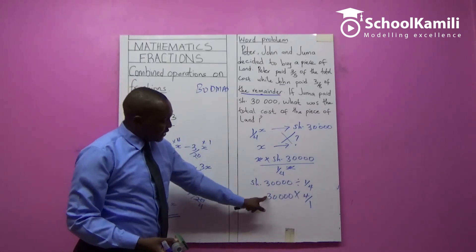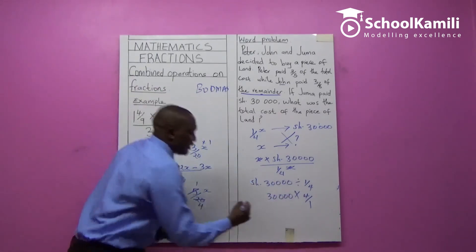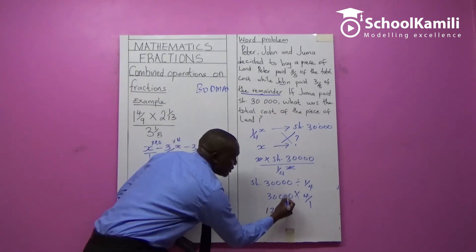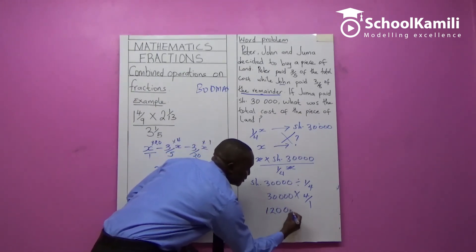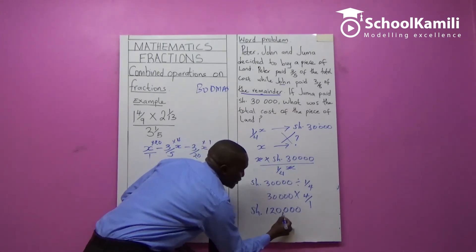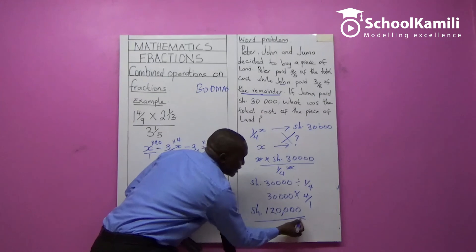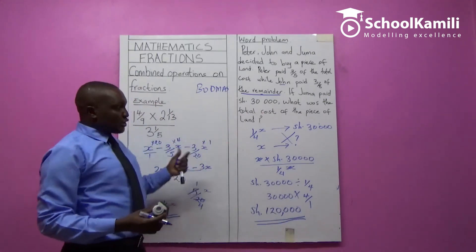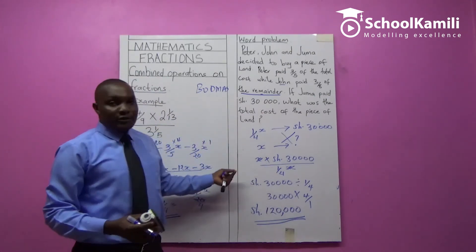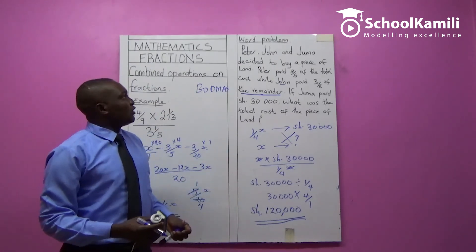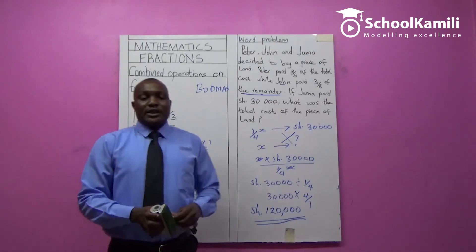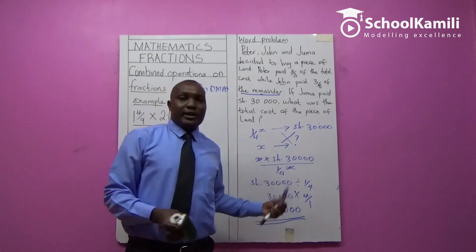The easiest way to multiply: 3 × 4 = 12, then count the zeros — that gives 120,000 shillings. That was the total cost of the piece of land. That's how you can solve word problems. Do more exercises and you'll be able to get the concept right.